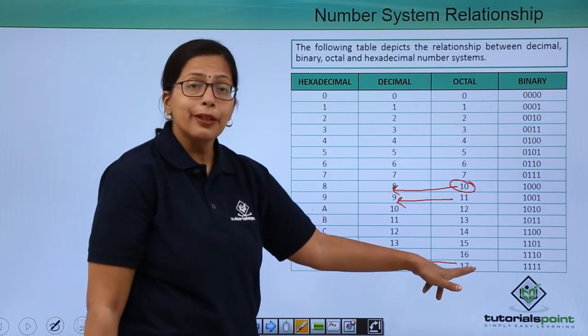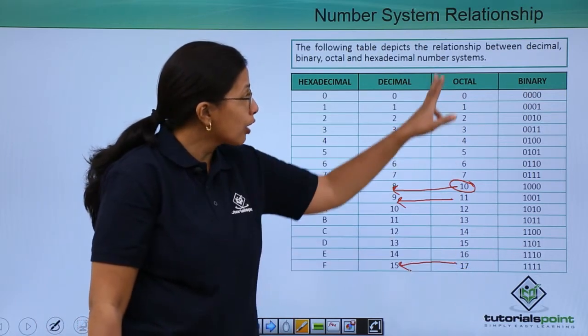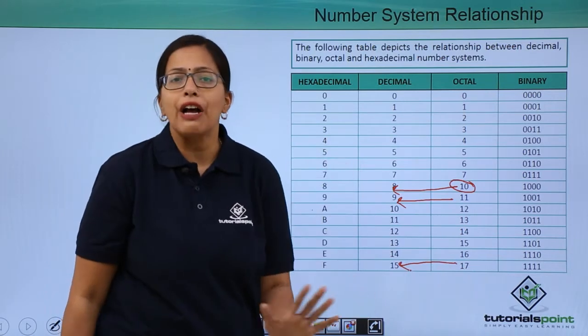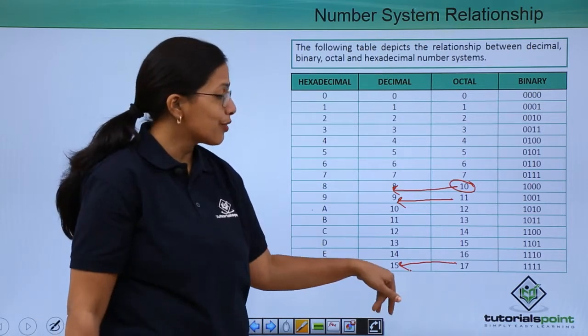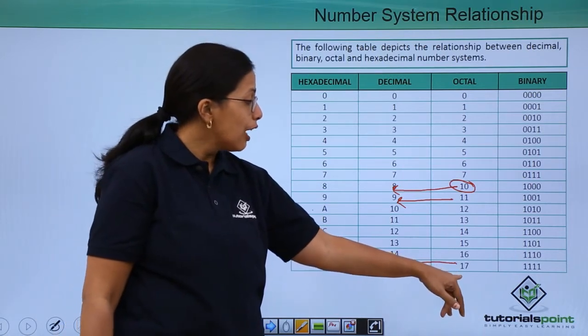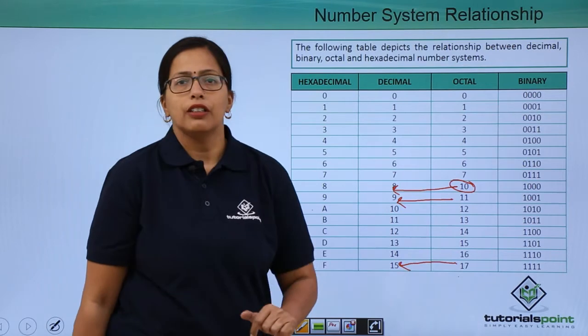You will remember that the octal number system can never have a digit that is greater than 7. If there was a number 16 here, then it would actually be 27.